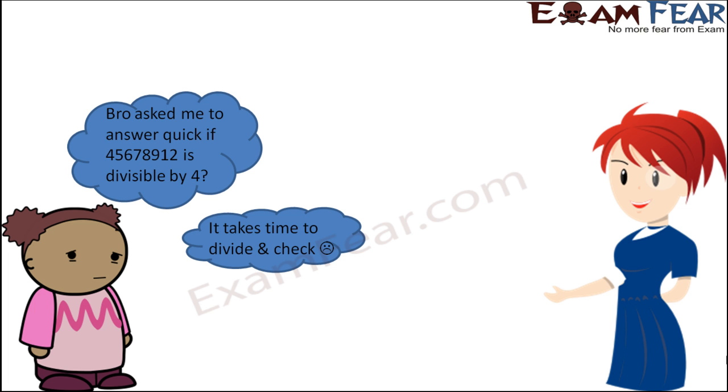Do you remember that we had learned about the divisibility rules? Like when you were often worried that your brother asked you to answer quickly if 45678912 is divisible by 4 or not. So you found it difficult to answer immediately because it takes some time to divide and then check.